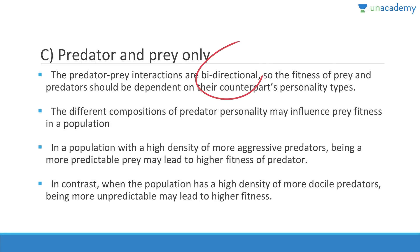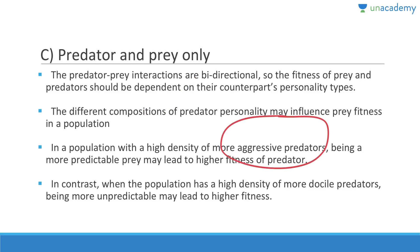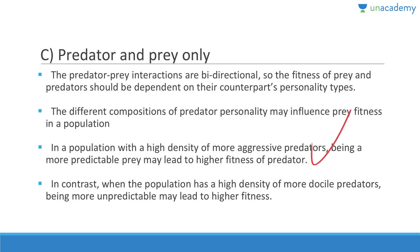Predation influences the fitness of both predator and prey — prey interactions are bi-directional. If deer becomes faster, cheetah must also evolve to become faster and more agile, and vice versa. The fitness of predator and prey is dependent on their counterparts. In a population with high-density aggressive predators, being a more predictable prey leads to higher predator fitness.